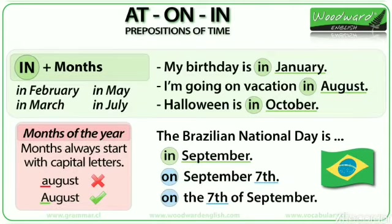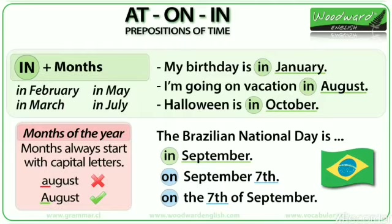The Brazilian National Day is on September 7th. Why do we use on? Because we are talking about a specific day. It doesn't matter if the month comes first — we still use on because it is a day of the month. The Brazilian National Day is on the 7th of September — again we use on because we are talking about a specific day. The order of month and day is not important; we are still talking about a specific day.